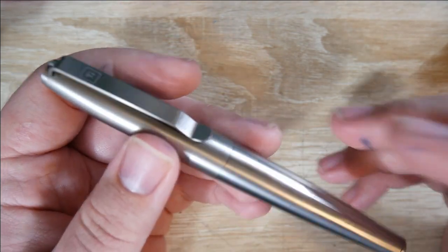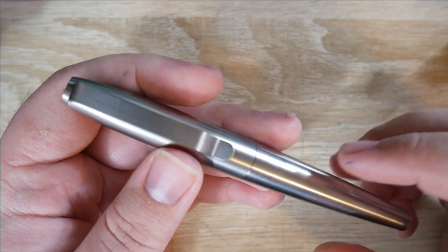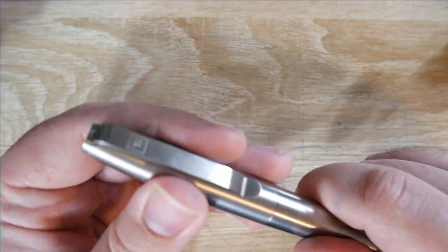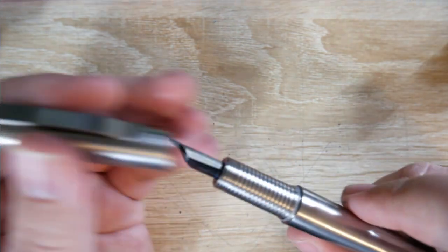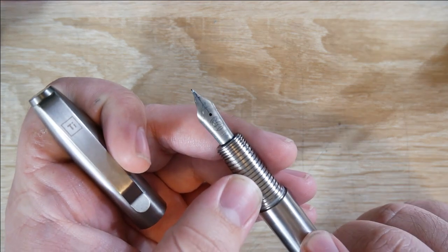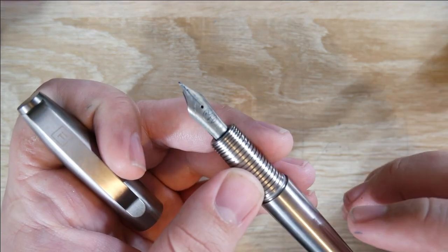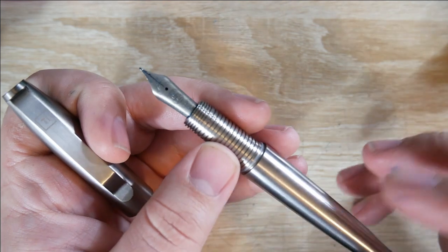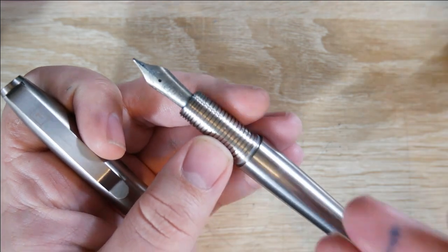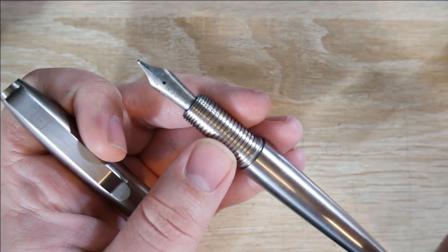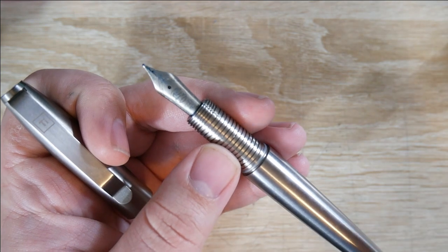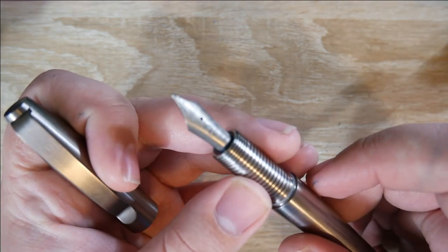Next up, the material. Titanium was used to make this pen, as well as the clip. And actually, one of the nibs, as well, is titanium. So that kind of constant theme throughout is really interesting. And you can get this in a couple of different finishes. They have this one, and then they also have a stonewashed finish, which is a little bit darker, a little more rough looking, if you're into that.